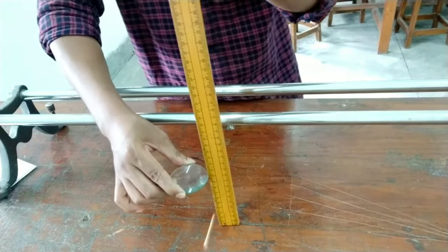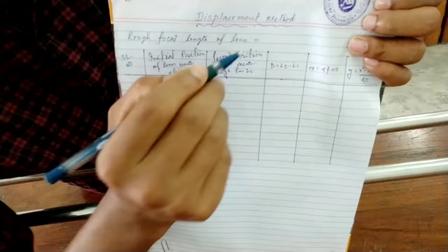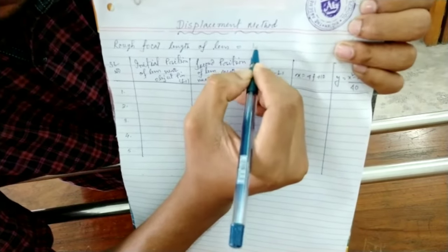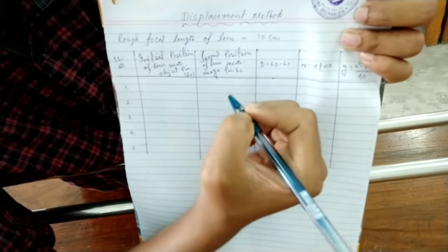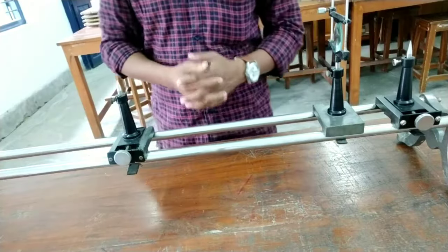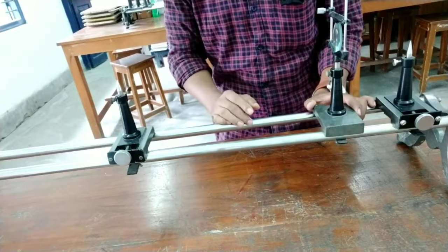So I am writing the rough focal length of the lens is 10 centimeter. Okay, now we will remove the parallax. Here two readings you have to take.